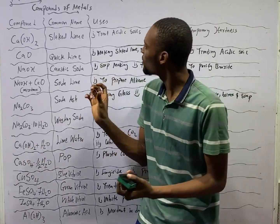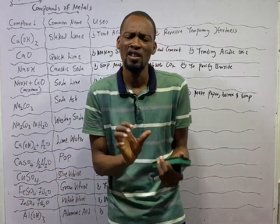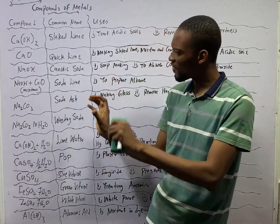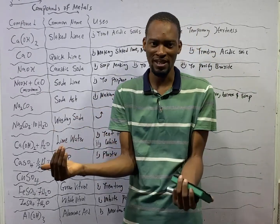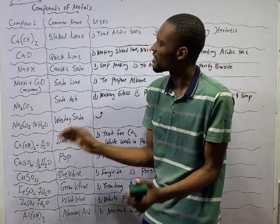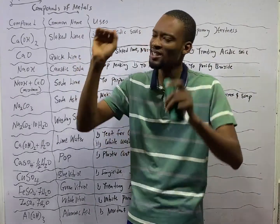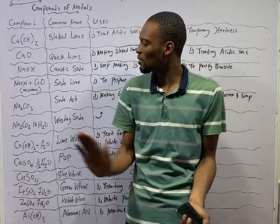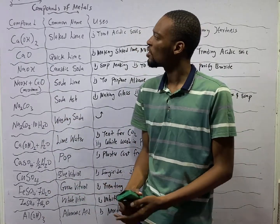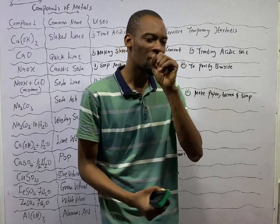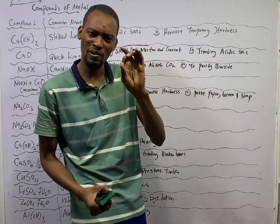In this episode, we shall be looking at important compounds of metals. Remember, we have been looking at metals but we have not really touched the compounds of metals. The general topic we are treating is metals and their compounds. So let's see the compounds formed by metals. JAM requires us to know these compounds, their common name or previous name, and the uses of the compounds of metals.